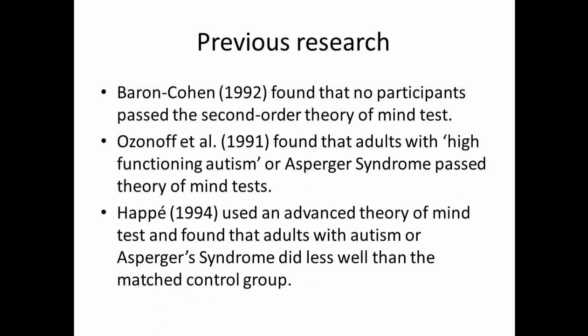In previous research, Baron-Cohen found that no participants on the autistic spectrum passed the second order theory of mind tests. However, other researchers such as Ozonoff et al. found that adults with high-functioning autism or Asperger's syndrome were able to pass those simpler tests. Happé found that adults with autism or Asperger's syndrome did less well than matched controls on her stories. Baron-Cohen's aim was therefore to develop a more advanced theory of mind test appropriate for adults with high-functioning autism and average or above-average IQ, to see whether there is a deficit in advanced theory of mind skills — and he developed the eyes task for this purpose.